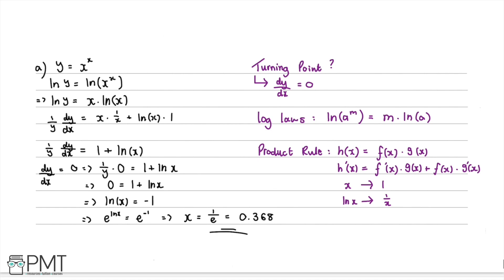This question was worth five marks. The first mark was for taking logarithms of both sides and applying the exponent log law to reach ln(y) = x·ln(x). Two marks were awarded for differentiating both sides to get (1/y)·(dy/dx) = 1 + ln(x). The fourth mark was for setting it equal to zero and reaching ln(x) = -1. The fifth mark was for the correct answer x = 1/e ≈ 0.368.